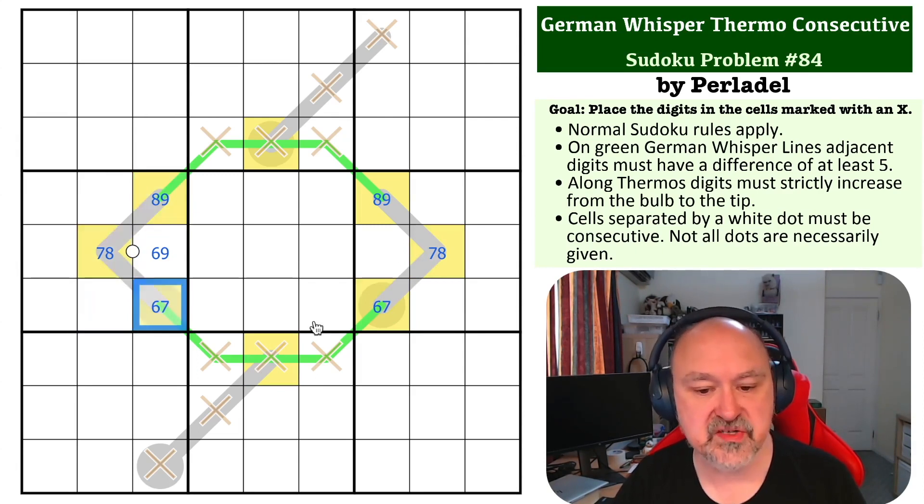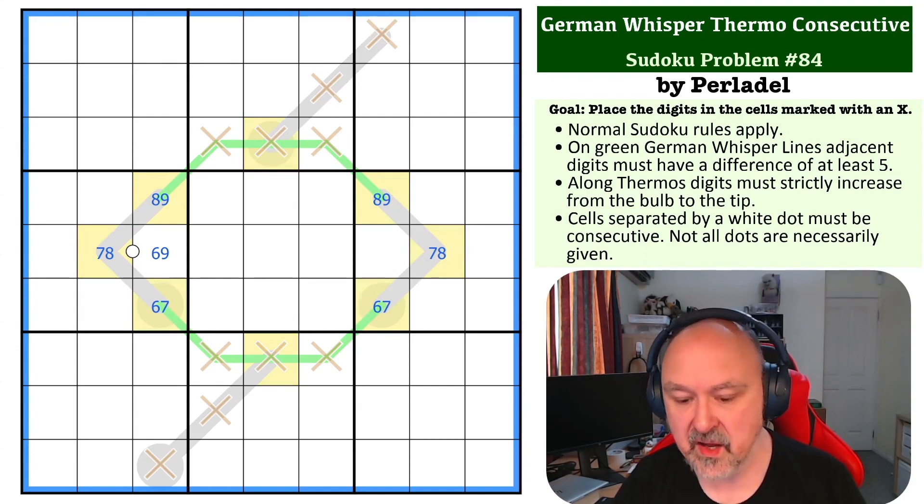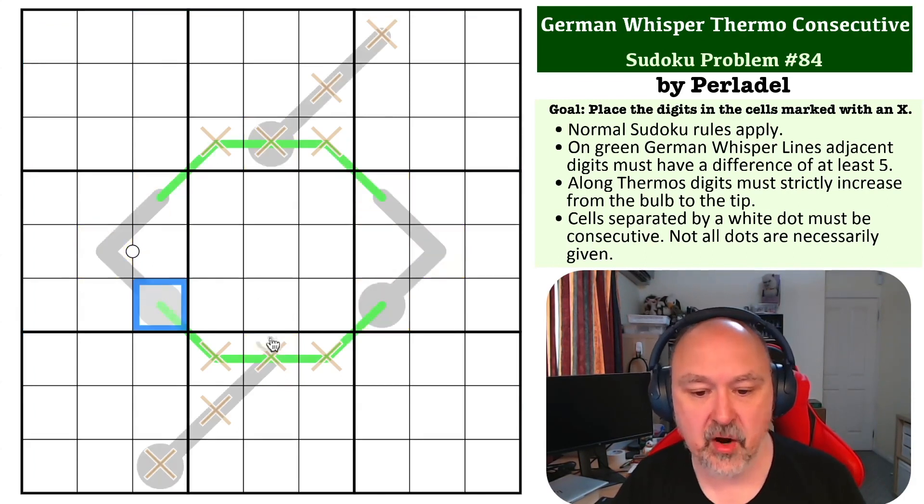These digits down here can't be high because these force all of these to be high and it just doesn't work. So these two digits just cannot be high and with those two digits not being able to be high, we know that those must be low.